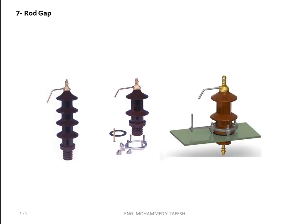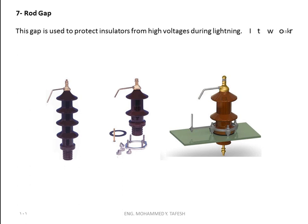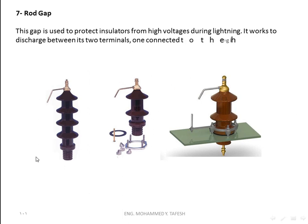The next component is rod gap. If you look at the picture, you will see an insulator with a gap. This gap is used to protect insulators from high voltages during lightning. It works to discharge between its two terminals — one connected to the high voltage and the other to the ground.